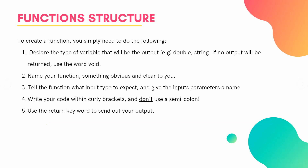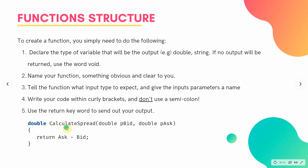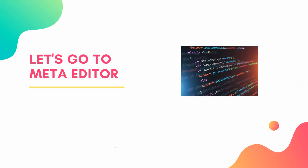Once you've written your code and want to send something back from your function, you use the return keyword. Here's a complete function example: double calculateSpread(double pBid, double pAsk) — we return pAsk minus pBid. That calculation produces a double, which is why the declared output type and the returned value type must match. Every time you call calculateSpread in your code it runs that calculation, making it reusable and keeping your code neat and tidy.